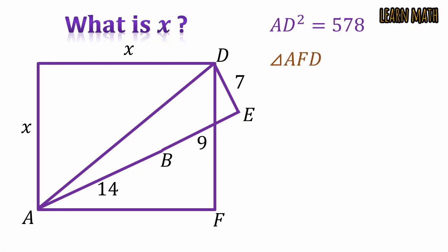In this right angle triangle, use the Pythagorean theorem and we can write AF square plus FD square is equal to AD square, where AF and FD is equal to x. So putting values in this we will get this.